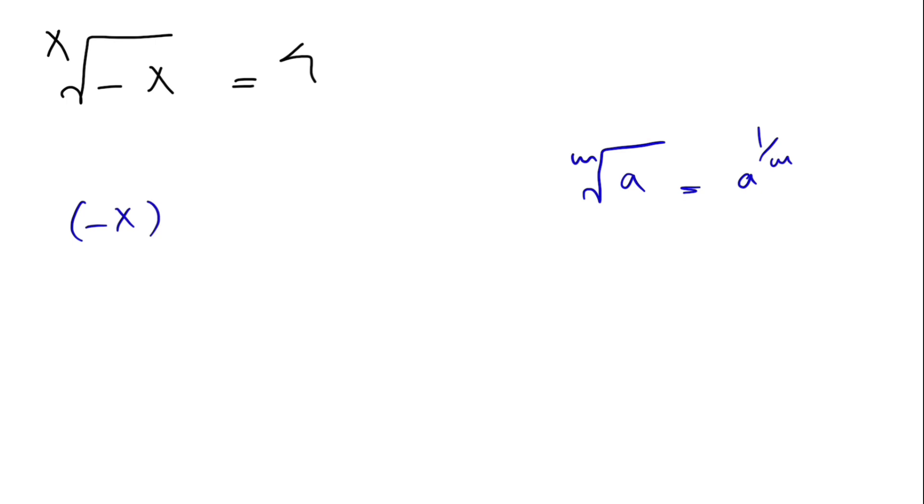So we have minus x to the power of 1 over x is equal to 4. In here let's call our 1 over x, y, and what we get is that our x will be 1 over y.